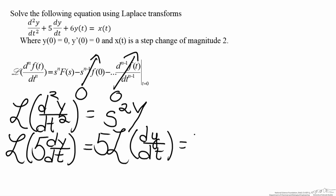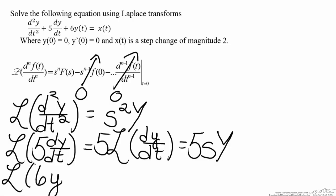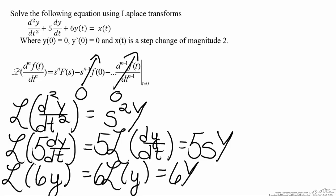Therefore, this will equal 5 multiplied by the s variable raised to the first power, multiplied by the Laplace Transform variable Y. For the third term, the Laplace Transform of a variable is the Laplace Transform variable. So the Laplace Transform of 6 times y in the time domain — factoring out the 6 — is going to equal 6 times the Laplace Transform of y, which equals 6 times the Laplace Transform variable, represented as capital Y.